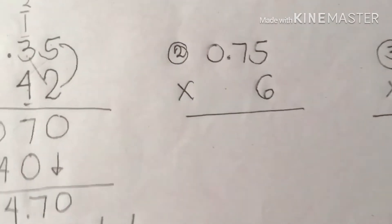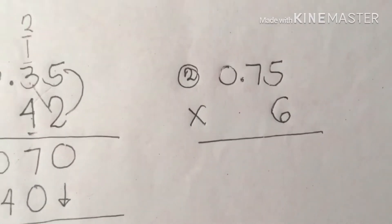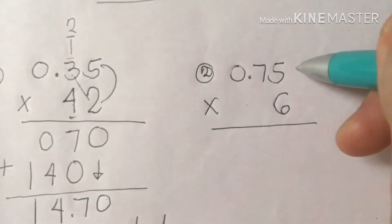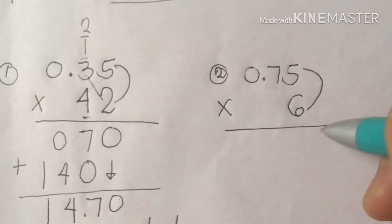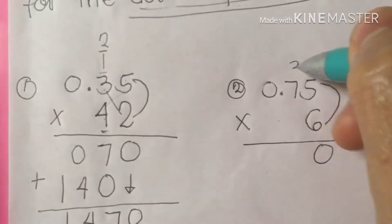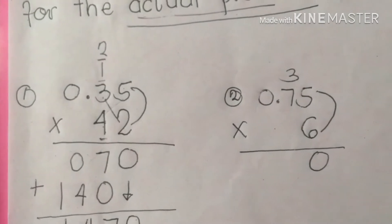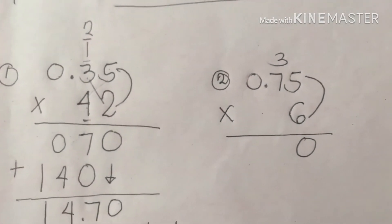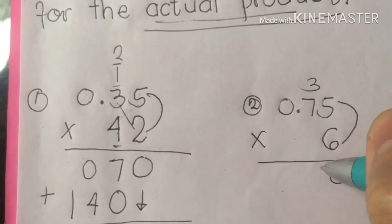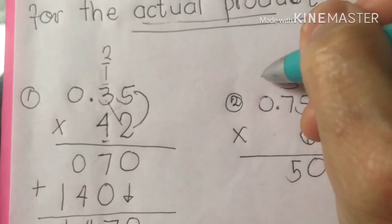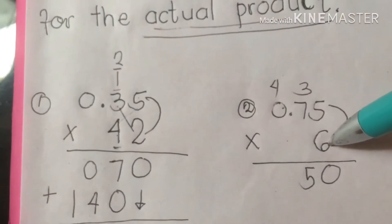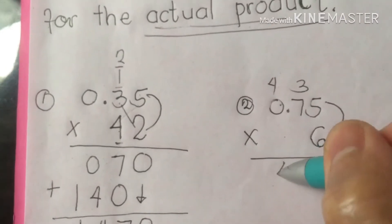Number 2: 0.75 times 6. Let's solve it. Start with 5 times 6: that's 30. Bring down 0, regroup 3. Next, 7 times 6 is 42, plus 3 is 45. We're going to regroup 4 here. 0 times 6 is 0, bring down 4. Remember class, any number multiplied by 0 — the answer must be 0.